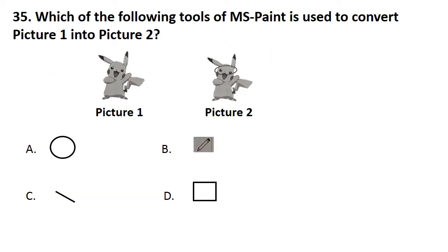Which of the following tools of MS Paint is used to convert picture 1 into picture 2? So the answer is option A. That's all. If you like this video, then please subscribe Kids A to Z for more worksheets and learning videos. Thanks for watching Kids A to Z.